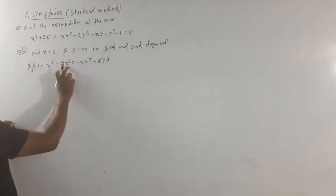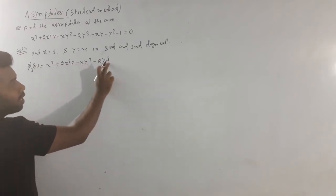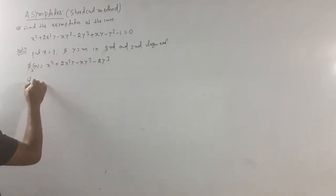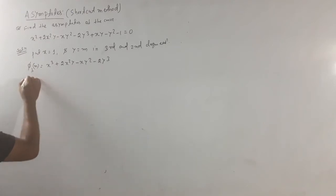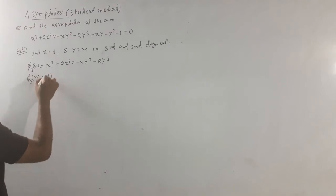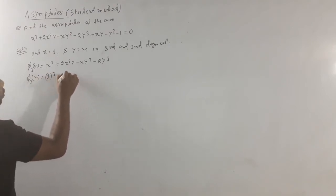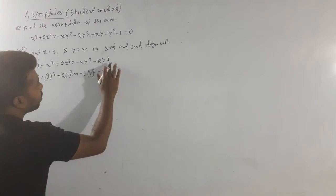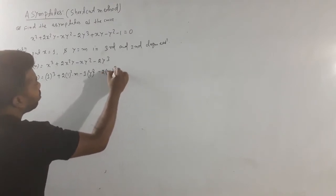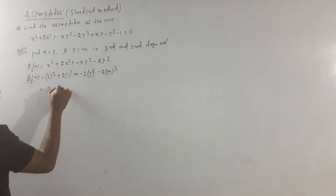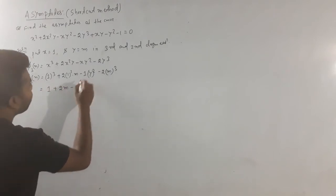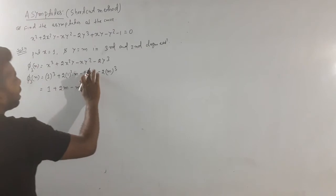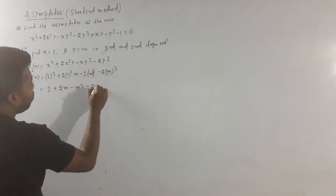Putting x=1, y=m: x³ gives 1, 2x²y gives 2m, -xy² gives -m², and -2y³ gives -2m³. So φ₃(m) = 1 + 2m - m² - 2m³.